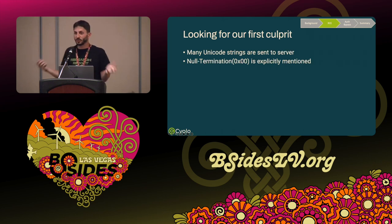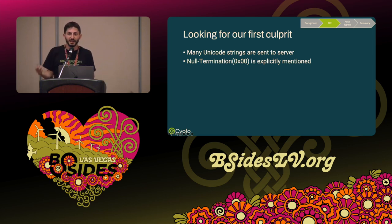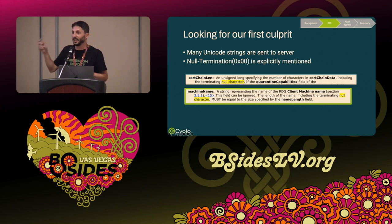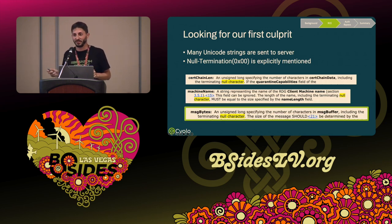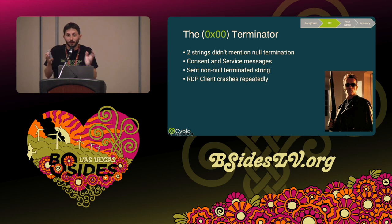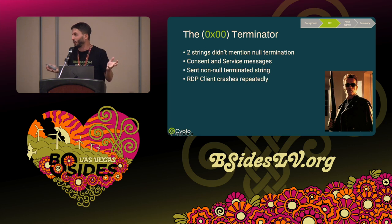We need to find our first vulnerability. Looking at the PDF, we noticed a pattern: every time the RDP Gateway sends a message to the client, it explicitly says the message needs to be null-terminated. But there were two instances where they didn't say that — they said to send a message with no null character. So we did exactly that, following the manual, and we noticed the client kept crashing.